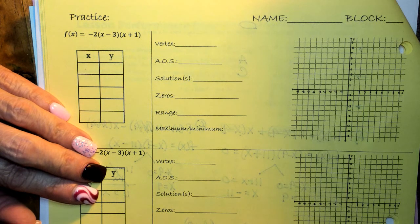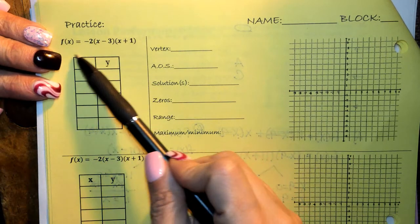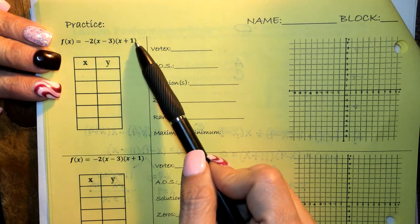Okay, so let's take a look at some more of these practices. I'm not going to do all of them, but I'll get you started on them. All right, so on this one, we've got f(x) equals negative 2 times x minus 3 times x plus 1.